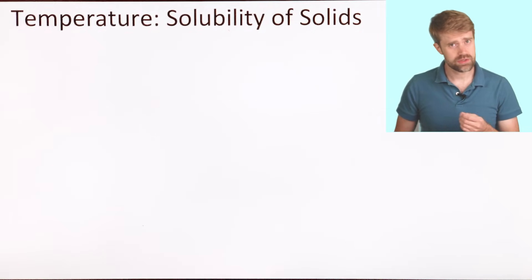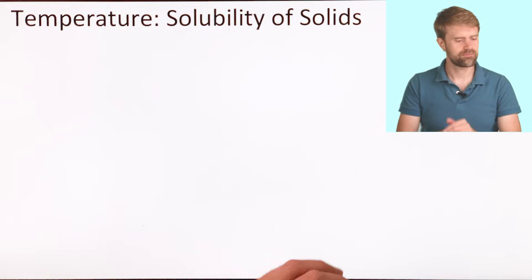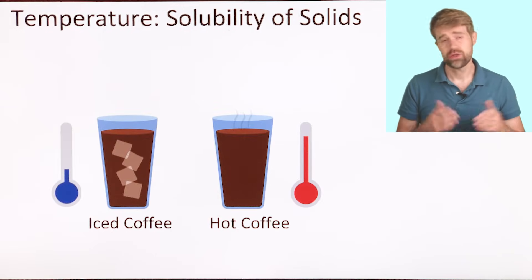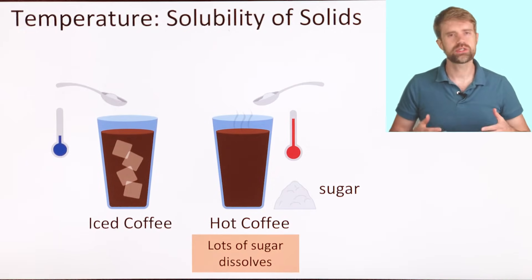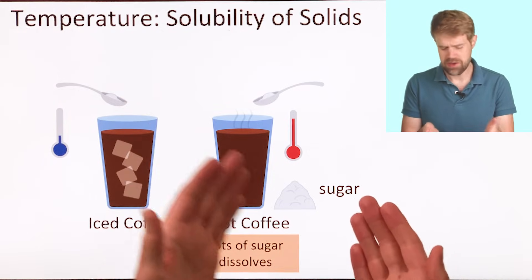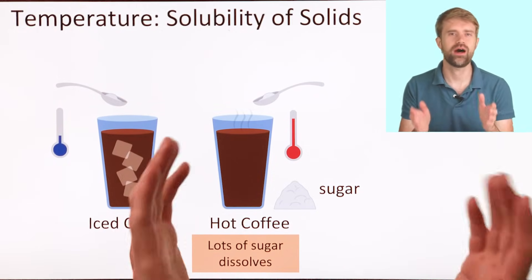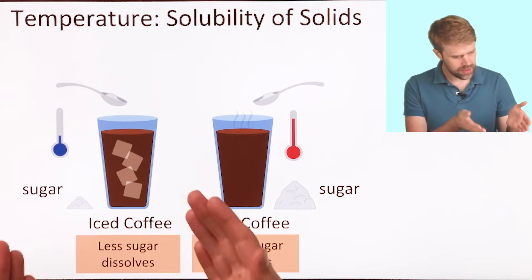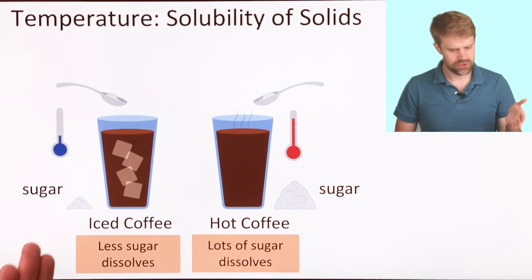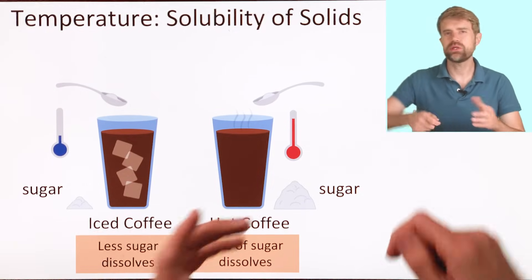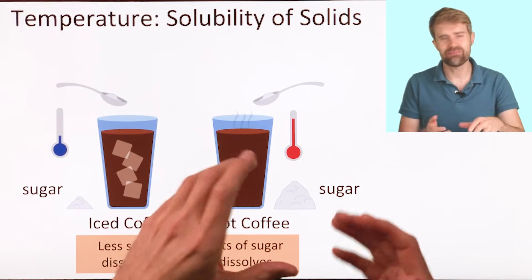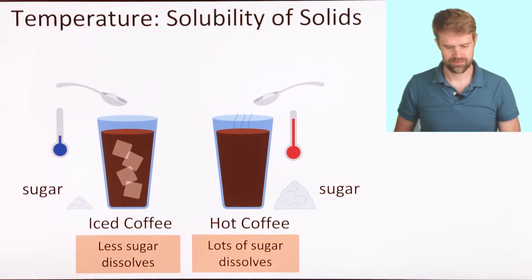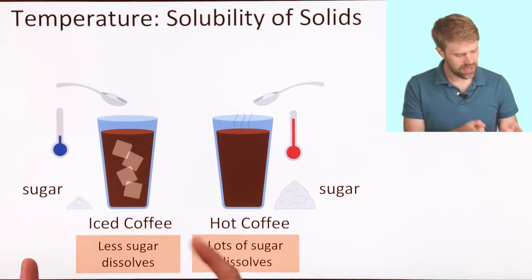First off, let's look at the solubility of solids dissolving in water. How does temperature affect this? You've probably seen this for yourself. Say you have hot coffee and iced coffee. You can dissolve lots of sugar into hot coffee — many, many spoons of sugar. But for cold iced coffee, a lot less sugar dissolves. After a certain point, you can stir as much as you want, but you can't get any more to dissolve. The sugar is just going to end up on the bottom of the glass, not dissolved. So, more sugar dissolves in the hot coffee and less dissolves in the cold iced coffee.